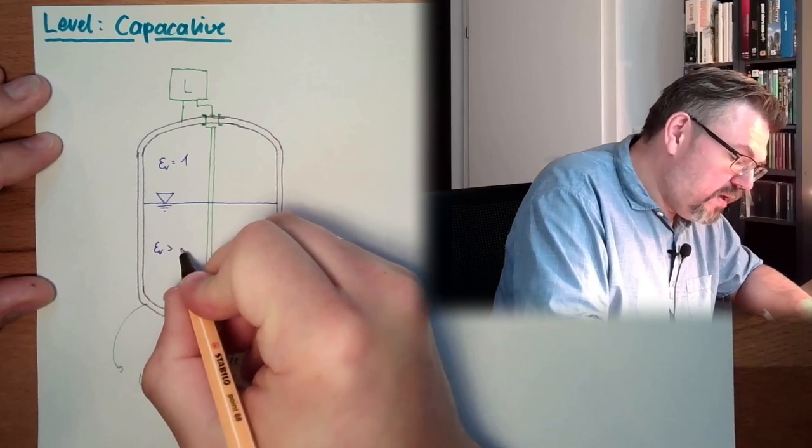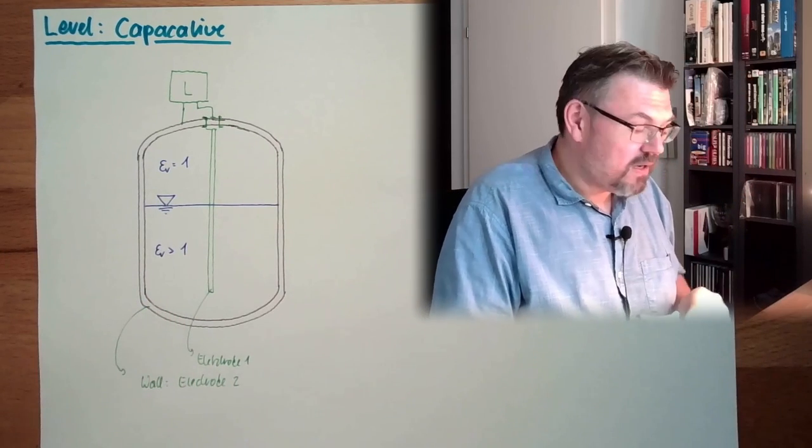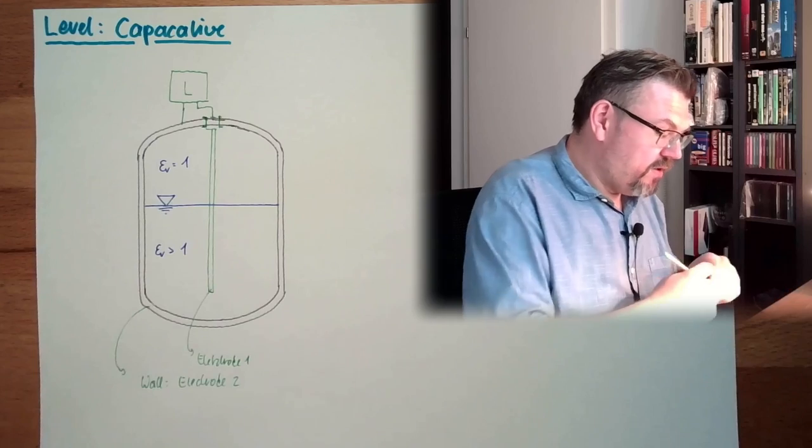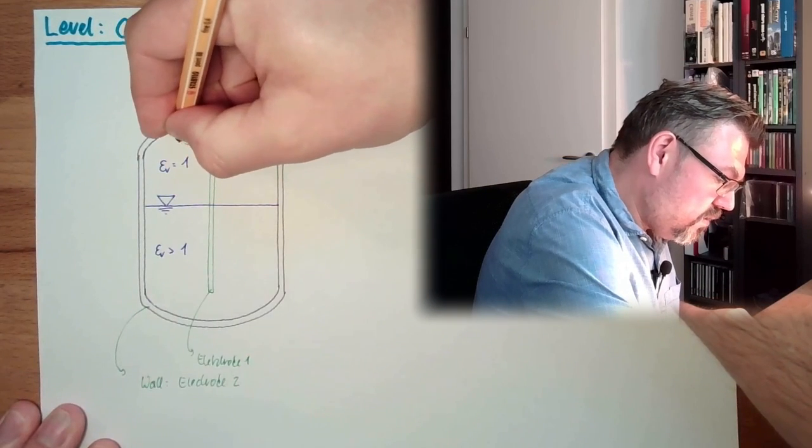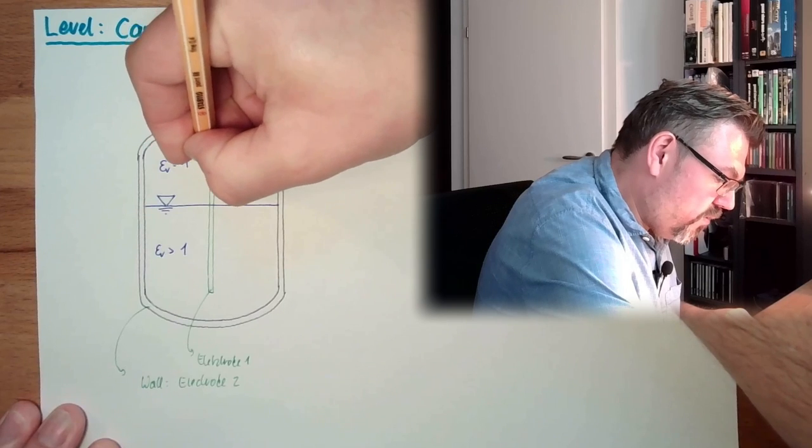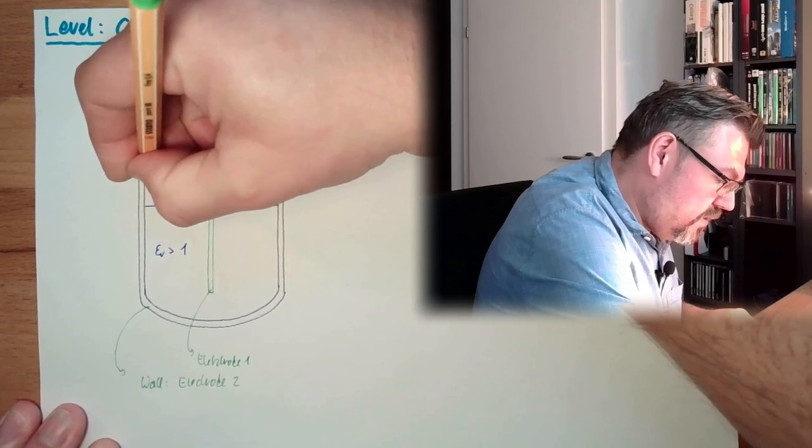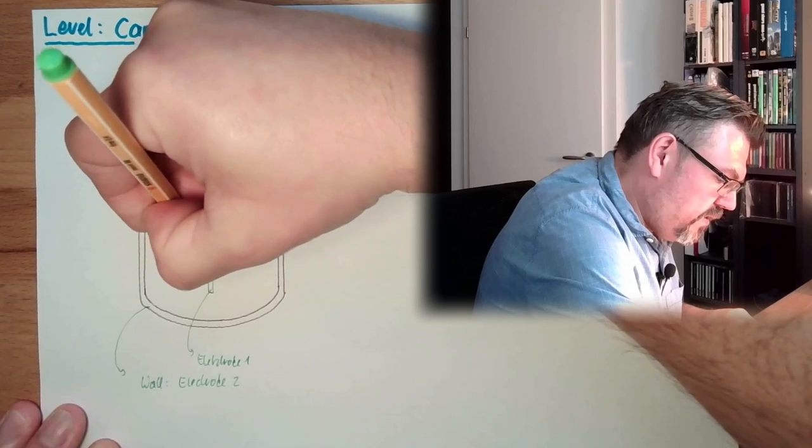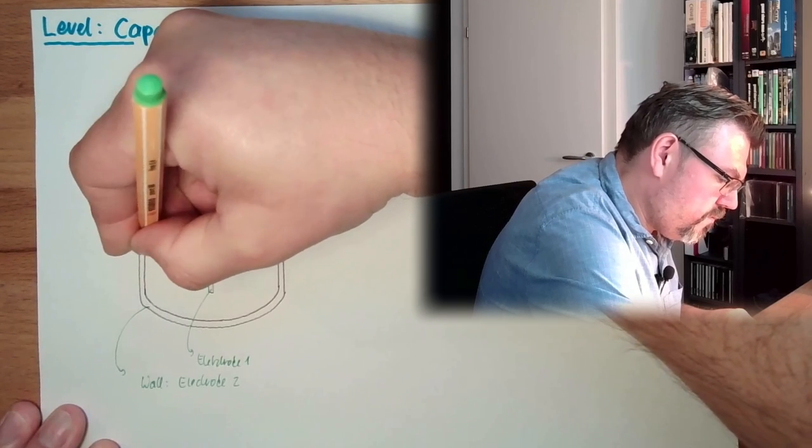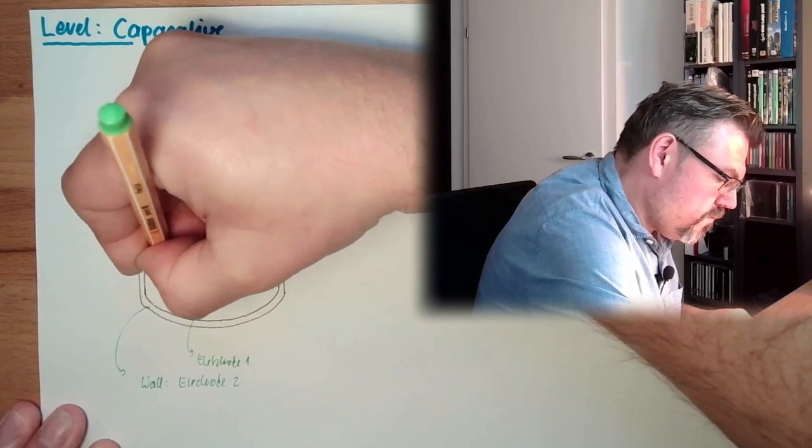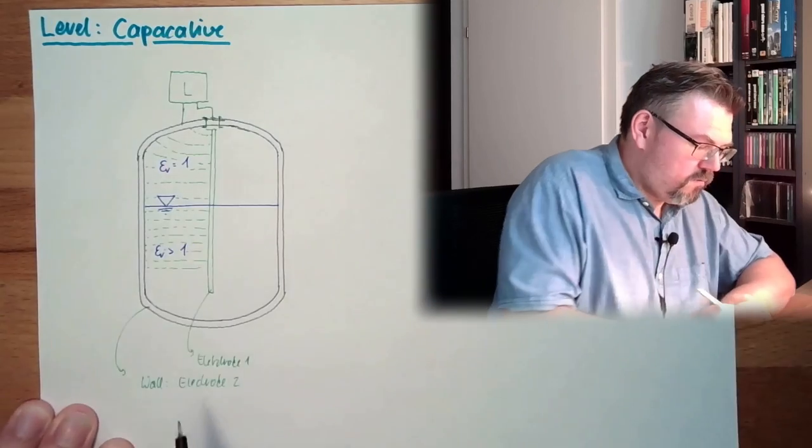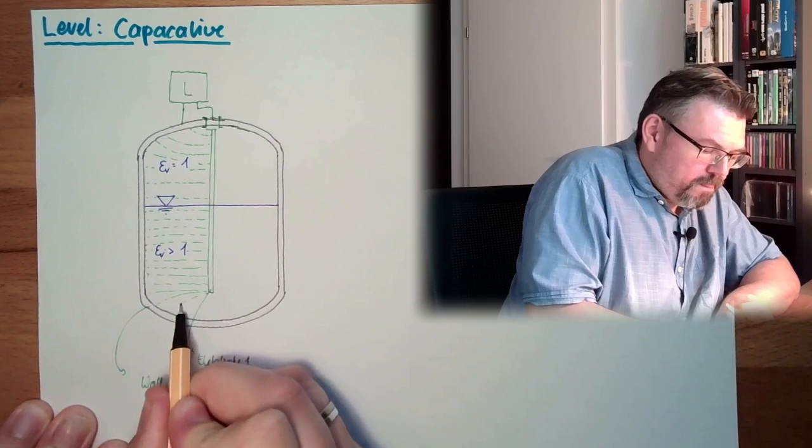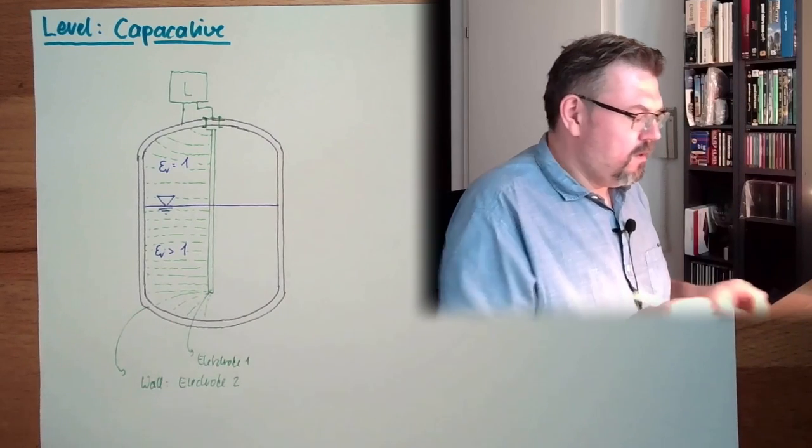And here we have an epsilon r bigger than one. And it is not allowed to be conductive, because then we would simply short-circuit those two things. So we're measuring the electrical field inside. It would look somehow like that. If this is conductive, we always have to hit a 90 degree angle. This would be the electric field. And here the electric field is denser.